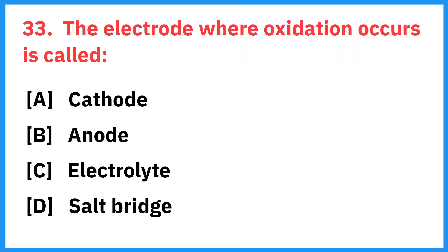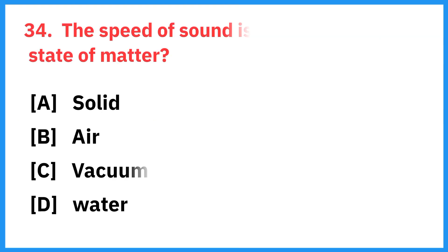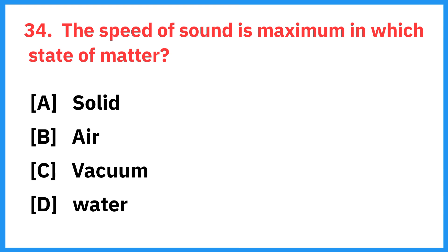The electrode where oxidation occurs is called? Right answer is anode. The speed of sound is maximum in which state of matter? Right answer is solid.